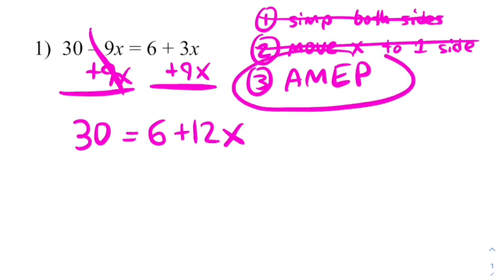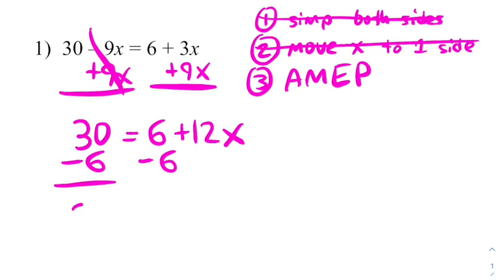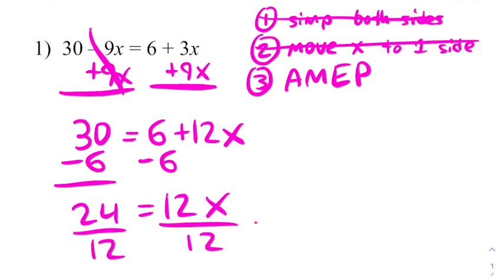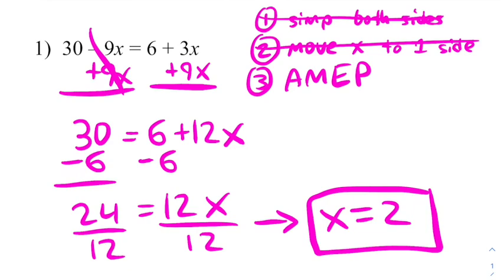And now that x is on one side, we can focus on AMEP. I'm going to subtract six and get twenty four equals twelve x, which then I can divide both sides by twelve to get an answer of x equals two or two equals x.